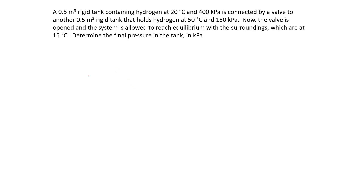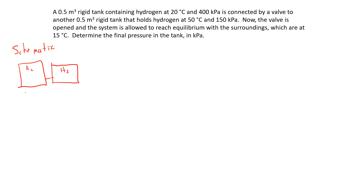Let's go ahead and do two example problems. Here's the first of two that we are going to do in this video. A 0.5 meter cubed rigid tank containing hydrogen at 20 degrees Celsius and 400 kPa is connected by a valve to another 0.5 meter cubed rigid tank that holds hydrogen at 50°C and 150 kPa. We'll call this tank A and tank B. Tank A has a temperature of 20°C and a pressure of 400 kPa, and tank B has a temperature of 50°C and a pressure of 150 kPa.